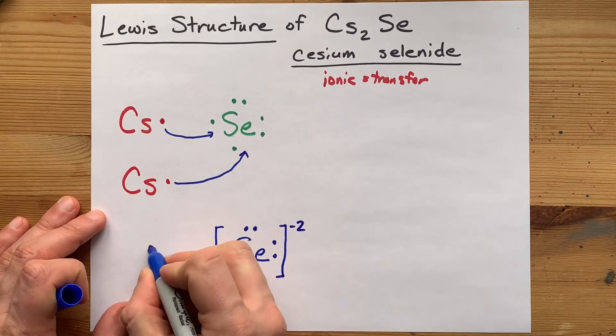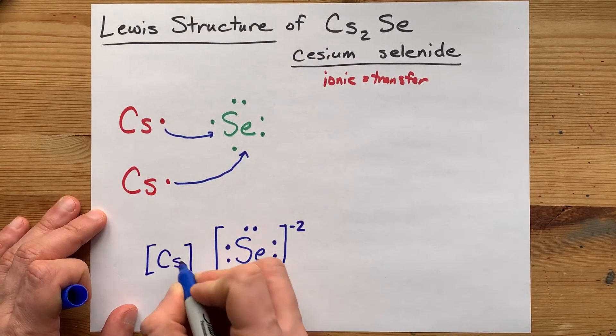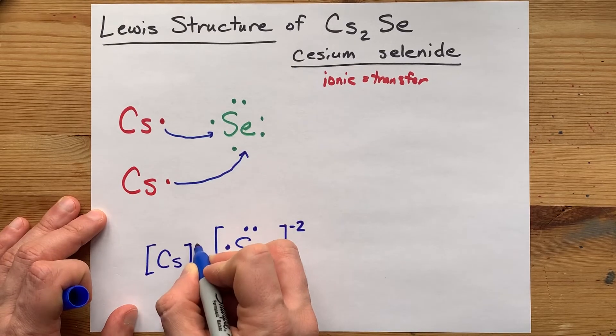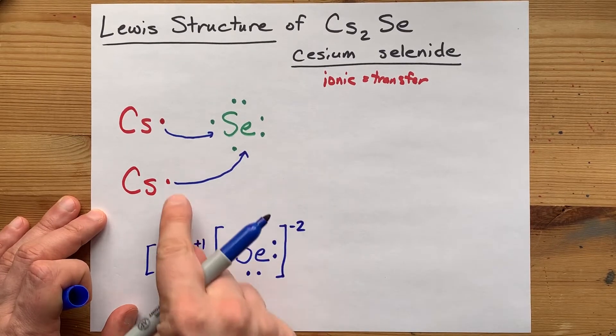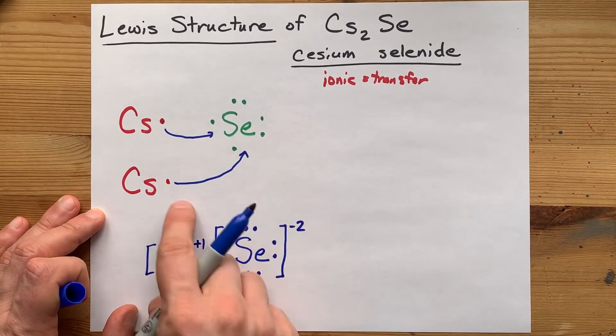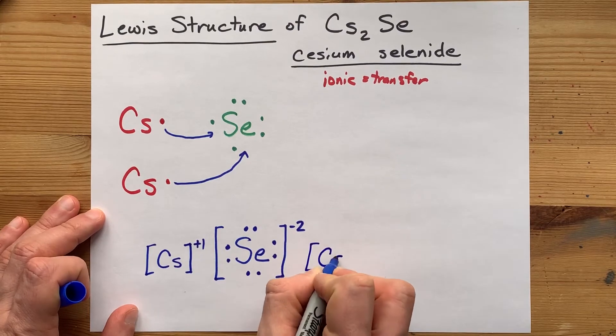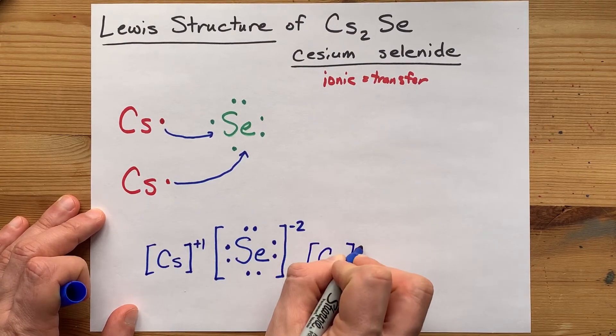Each of the cesiums had one but gave it away, so I want you to draw it with no valence electrons, and because you lost a minus charge, it actually gets a positive charge. When you minus a negative, it turns plus. And I want you to draw a second one on the other side because there are two of them.